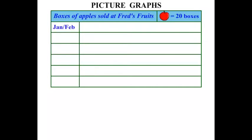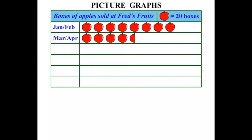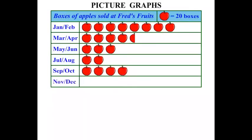We have data shown for January and February, March and April — one looks like it's been cut off there — May and June, July and August, September-October, and November-December.